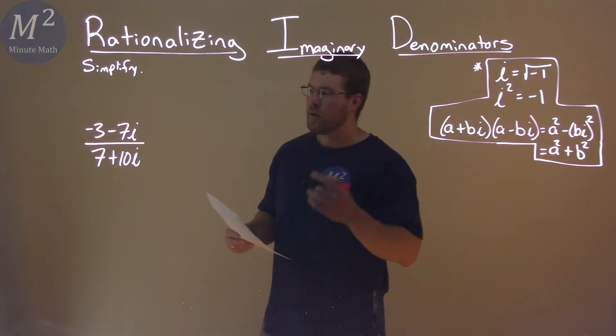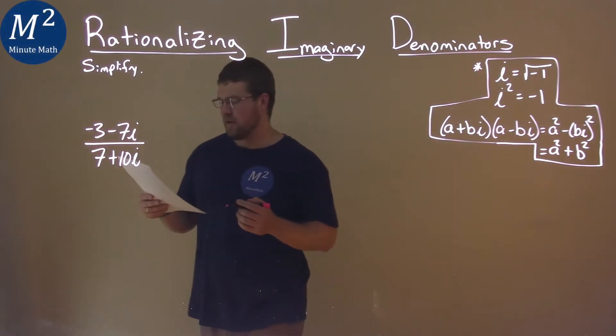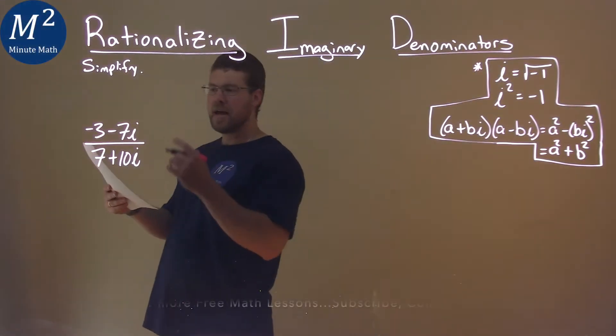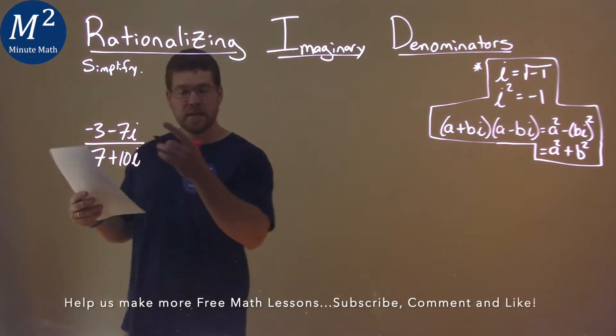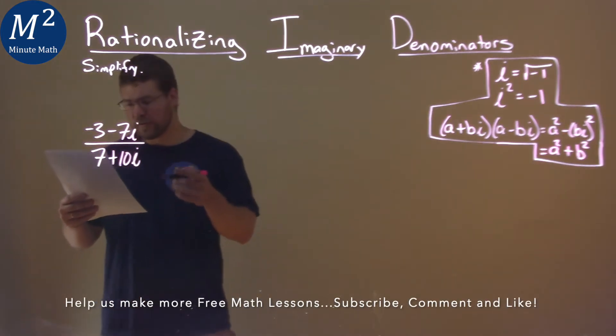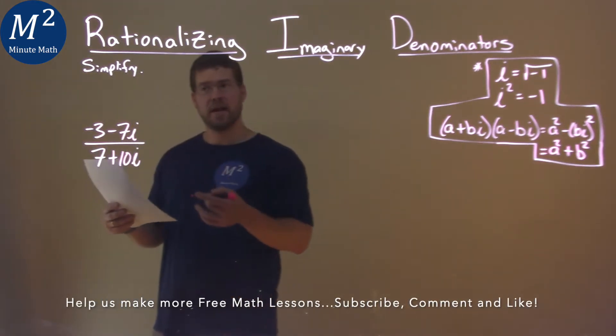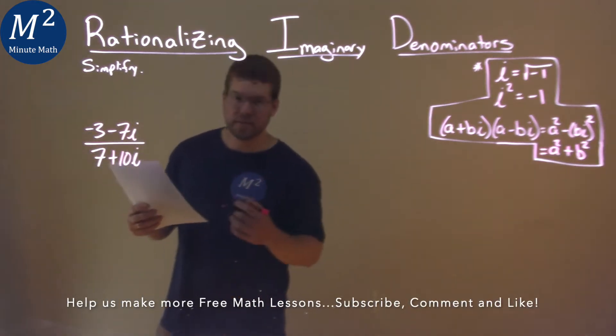We're given this problem right here: negative 3 minus 7i over 7 plus 10i, and we've got to simplify this.